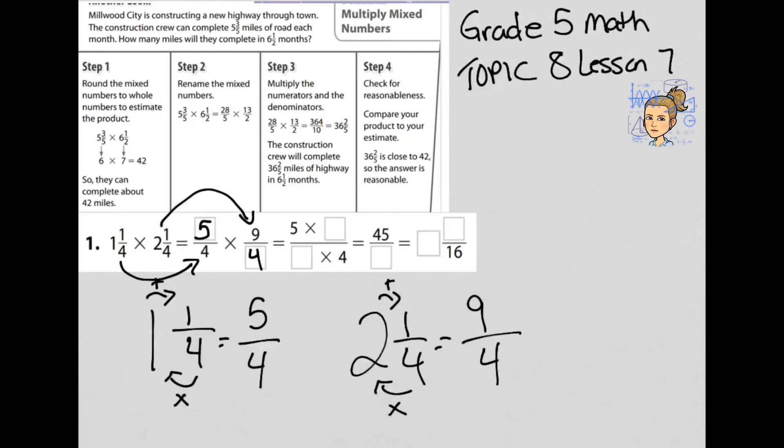Now I'm going to multiply the fractions as normal with multiplying the numerators and then multiplying the denominators. So I have 5 times 9 on the top for the numerator, and I have 4 times 4 on the bottom for the denominator. 5 times 9 is 45, 4 times 4 is going to be 16. Now I have this fraction greater than 1. I have to change it back into a mixed number to finish off this problem.